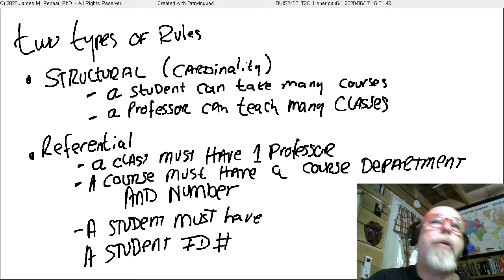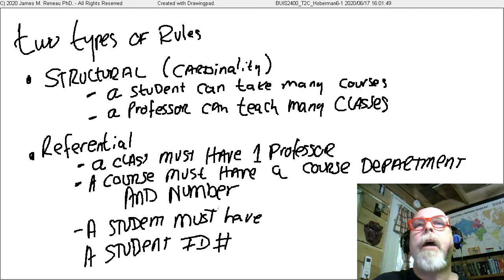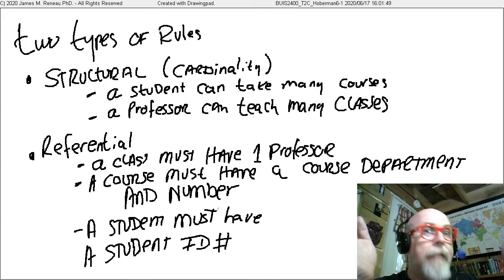Let's take a look at some rules about the university. A student can take many courses. That's a structural thing, right? A student, courses. A student can have many courses. A professor can teach many classes. That makes sense. A professor, lots of classes.